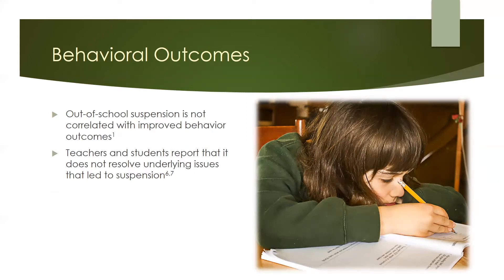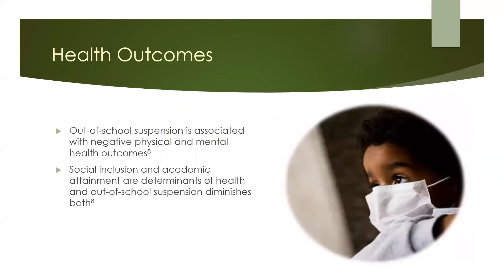Out-of-school suspension separates students from the potentially positive influence of teachers and their peers at school, and students report feeling excluded or looked down upon by other students when they return from suspension. Not only has out-of-school suspension been shown to be ineffective at changing behavior, it also has been associated with other negative outcomes. For example, out-of-school suspension has been associated with negative physical and mental health outcomes. This makes sense as social exclusion arises as a result of out-of-school suspension, and social inclusion is a major determinant of mental and physical health.